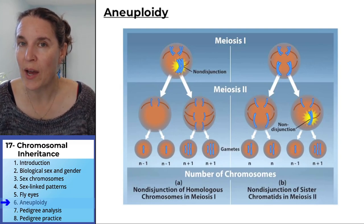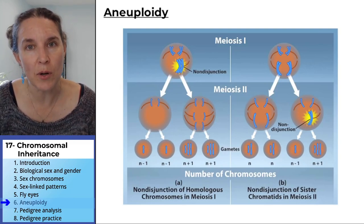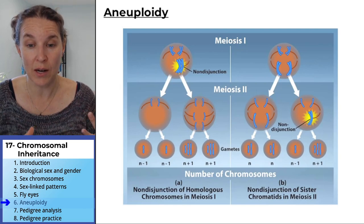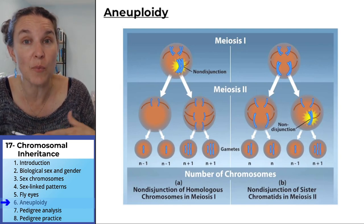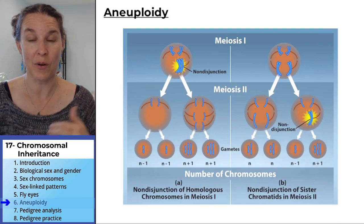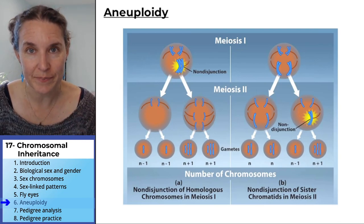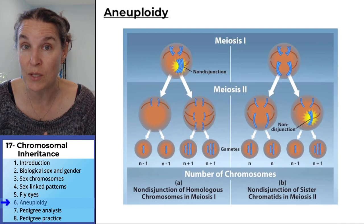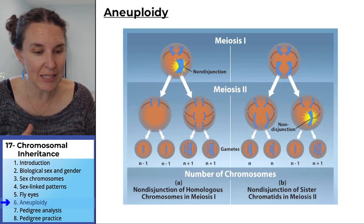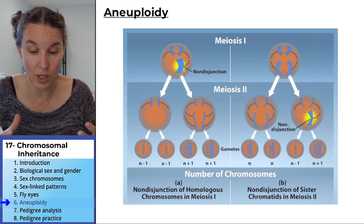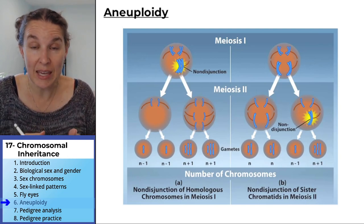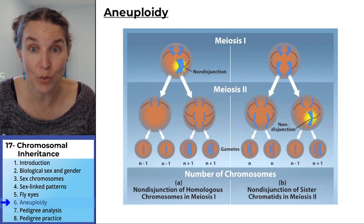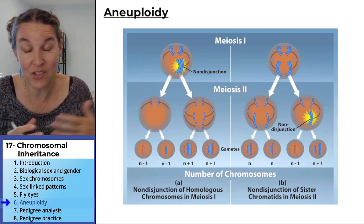Aneuploidy happens when you have an abnormal number of chromosomes in your karyotype — your cells end up with an abnormal number of chromosomes. Most cases of aneuploidy — too many or not enough chromosomes — result in death. This is miscarriage. If you make a kid that has the wrong number of chromosomes, you might not even know because it's not going to survive.